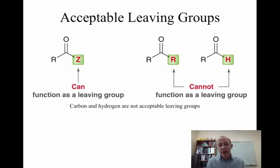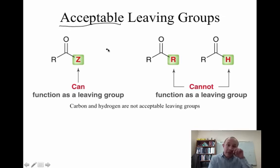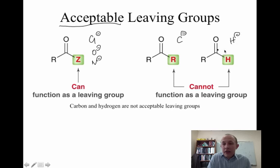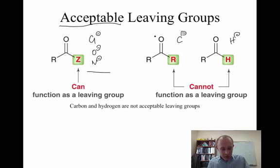So what can be a leaving group? This is a bit confusing because in SN2 we only talked about good leaving groups, but now we're going to look at anything that's an acceptable leaving group. Anything with a Cl⁻, O⁻, or N⁻ can be a leaving group in these reactions. What can't be a leaving group? Anything with a C⁻ or an H⁻ — you'll never see these things leaving. They're just too unstable. Carbon and hydrogen have about equal electronegativity and are less electronegative than nitrogen, oxygen, or chlorine, so while those are stable enough to leave, carbon and hydrogen can never leave.